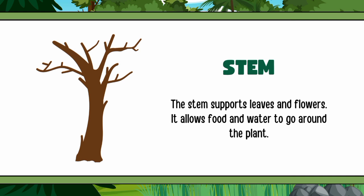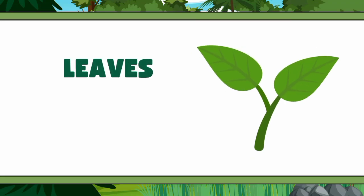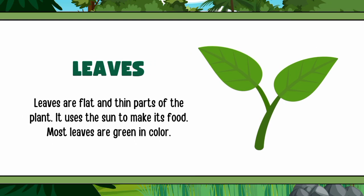The stem supports leaves and flowers, and allows food and water to travel around the plant. Leaves are flat and thin parts of the plant. They use the sun to make food, and most leaves are green in color.